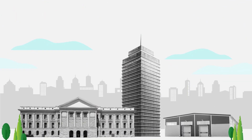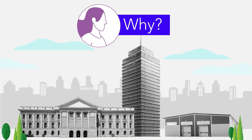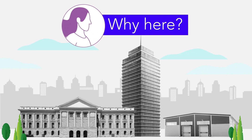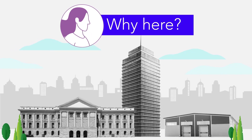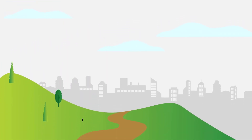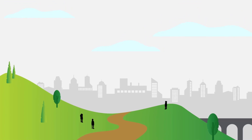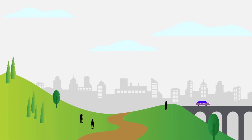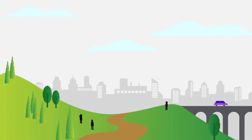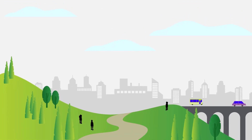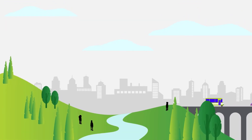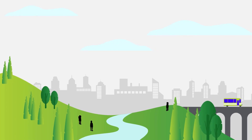GIS empowers governments to ask not only why this is happening, but why this is happening here. Public policy guided by place-based intervention ensures communities can prioritize their efforts block by block, stream by stream, or highway by highway.